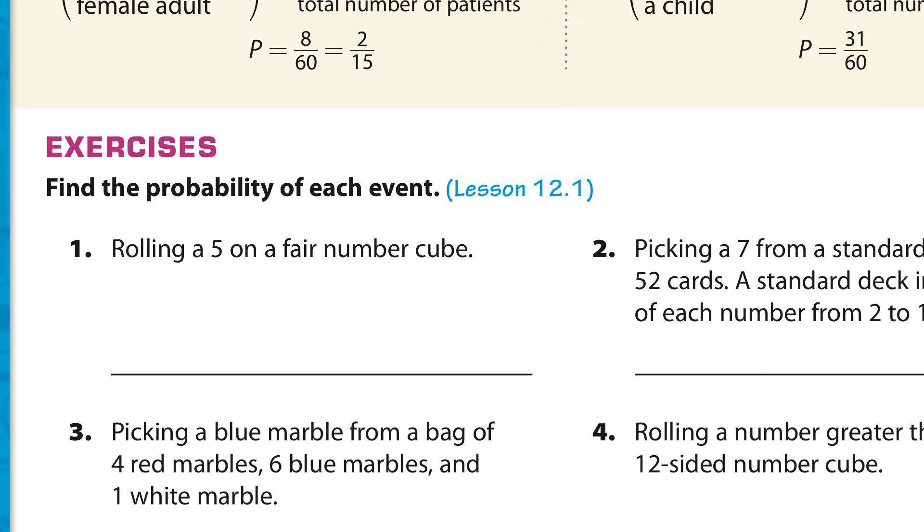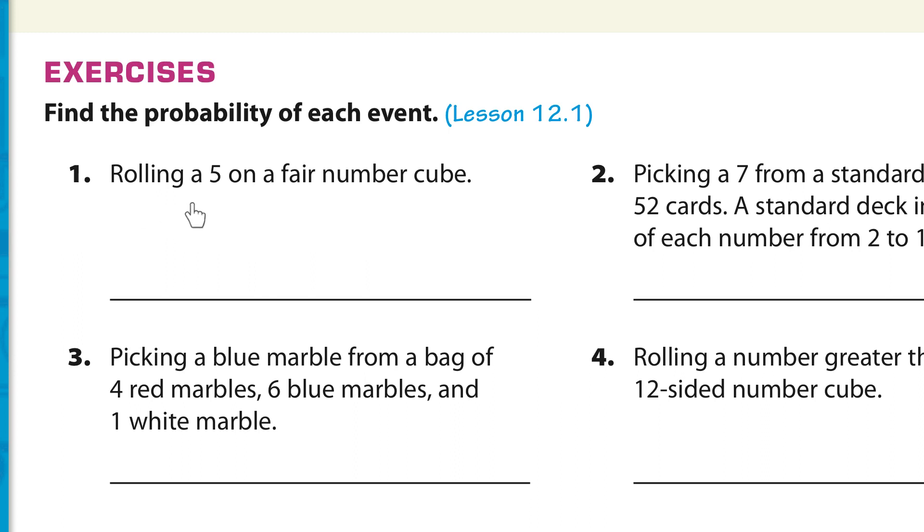So, let's talk about these here. What's the probability of each event? Rolling a 5 on a fair number cube, which is a die. How many 5's are there? Well, there's only one 5 on a number cube. And there's 6 sides. So, 1 out of 6.